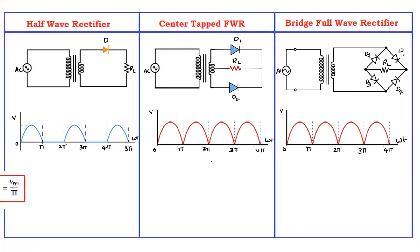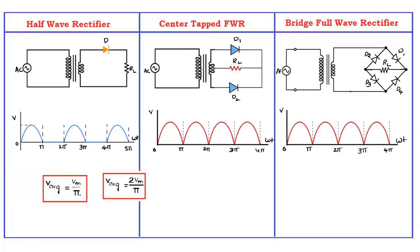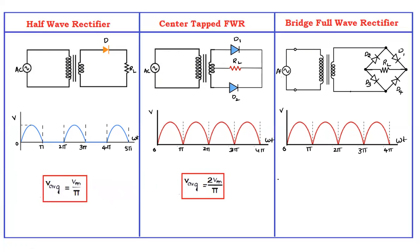Looking at the average values: the average value of the half wave rectifier is V_avg = Vm/π. For the center tapped full wave rectifier, V_avg = 2Vm/π. For the bridge full wave rectifier, V_avg = 2Vm/π as well. Since the waveforms of the center tapped and bridge rectifiers are the same, their average values are the same.